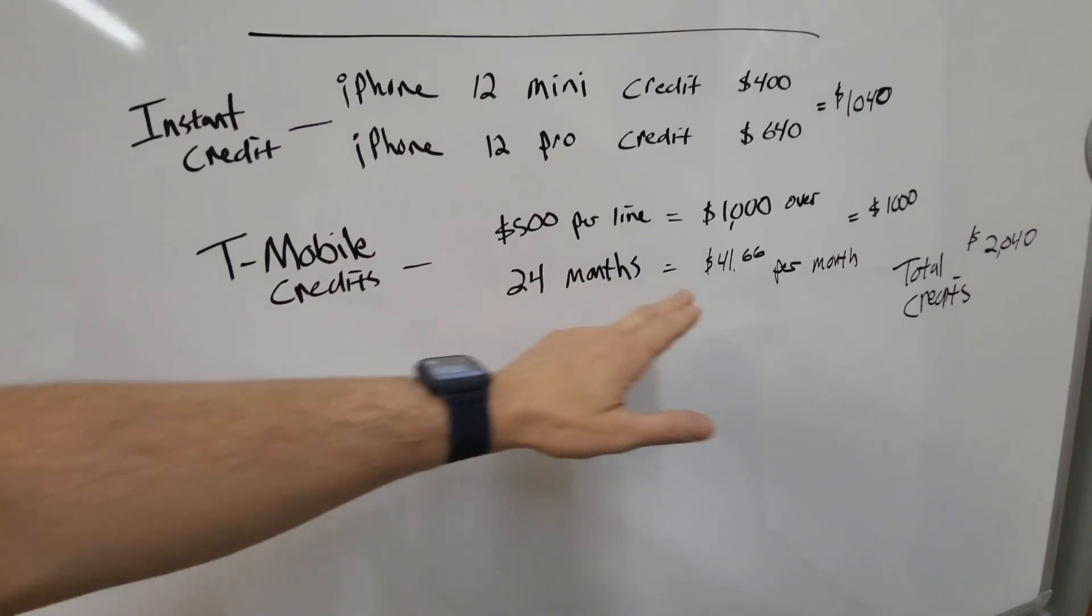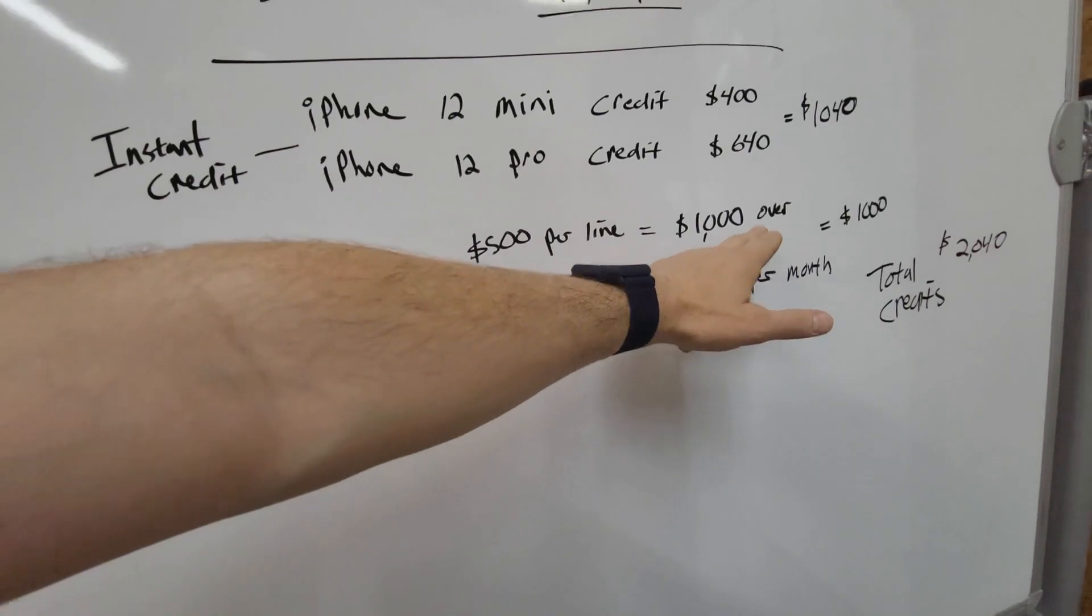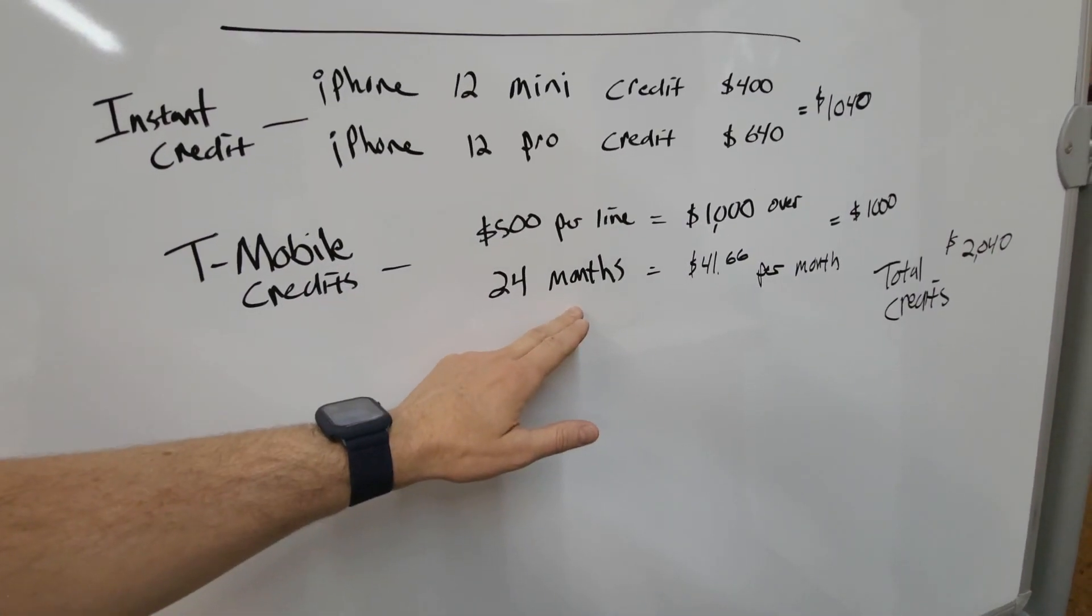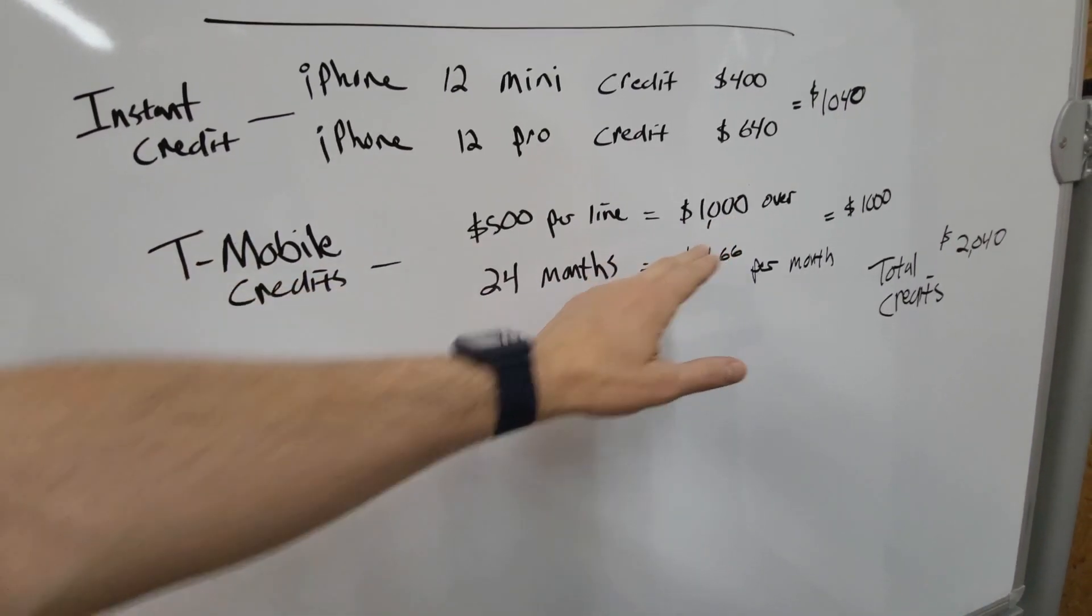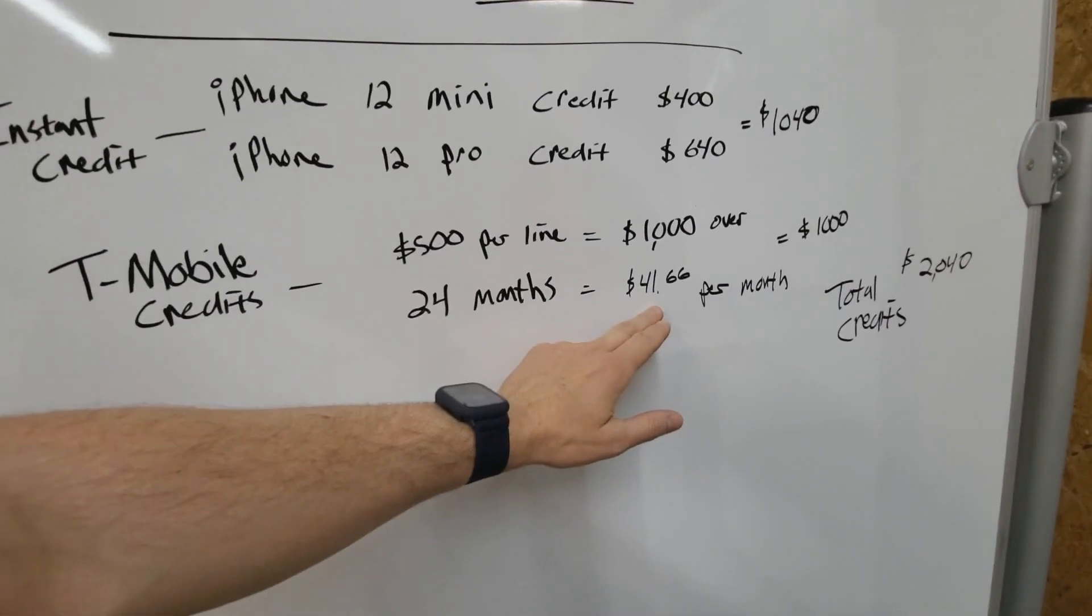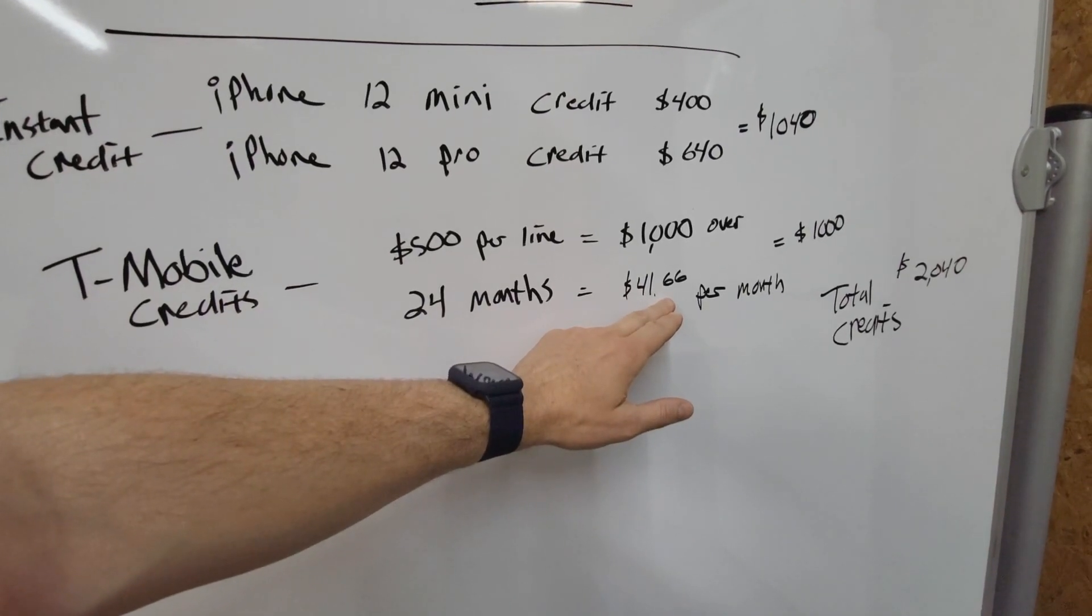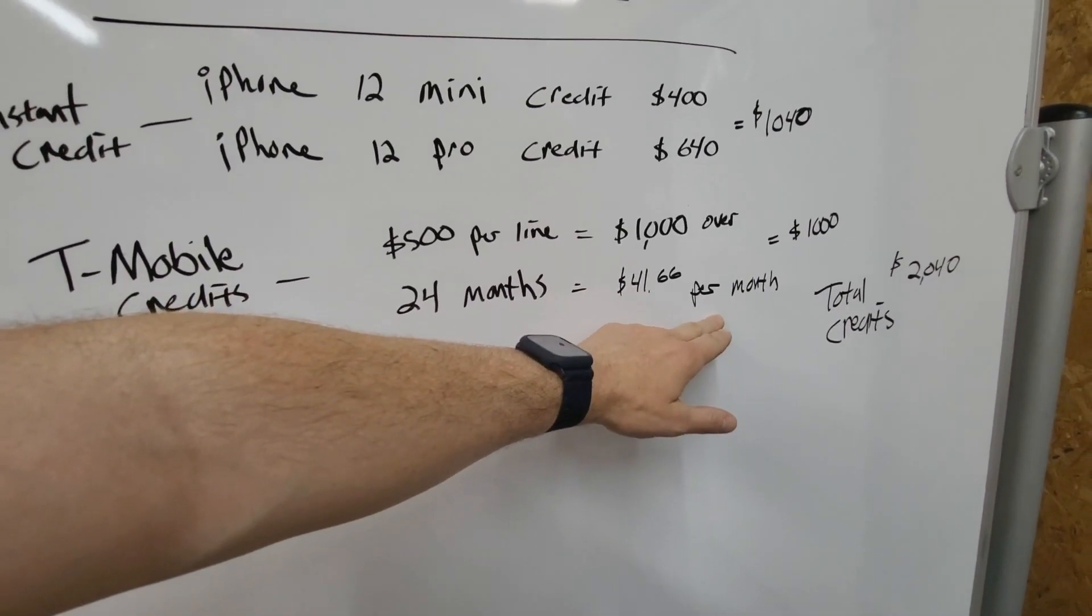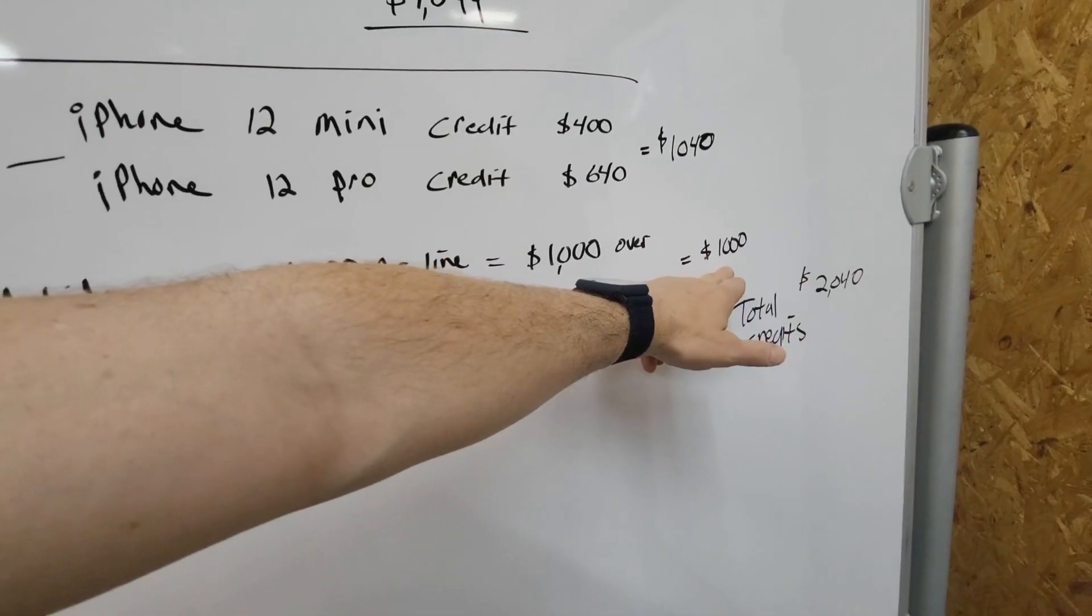Which for both of us would be a thousand bucks over 24 months. So they take that thousand dollars, or the $500 per line, they split it up over 24 months. They essentially give you a credit of $41.66 per month for 24 months. Still a thousand dollars worth of credit.